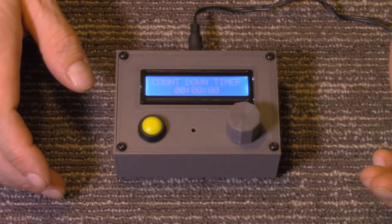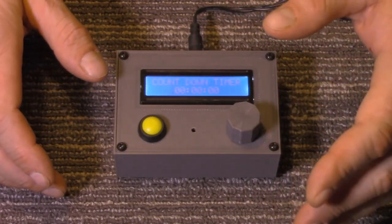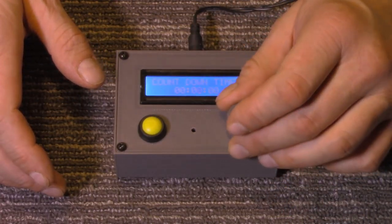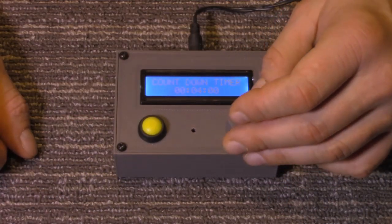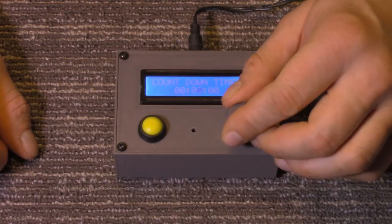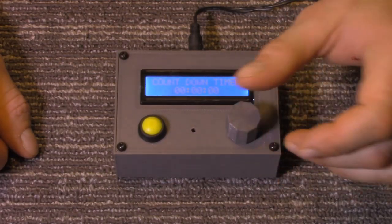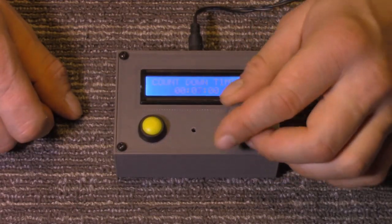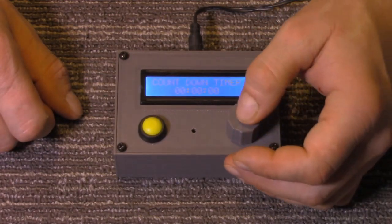Then just push the rotary encoder, because we're using a rotary encoder that has a built-in push button, and now you see it goes to minutes. And that is set for a maximum of 60 minutes and a minimum of zero, so it won't go into the negatives. Then for seconds, if you're timing something down to the second.